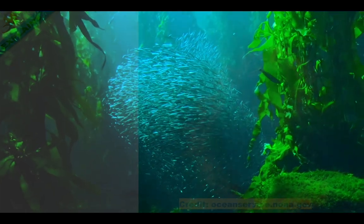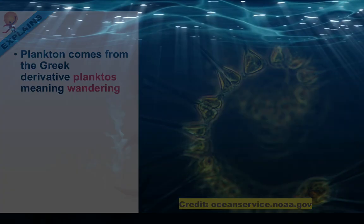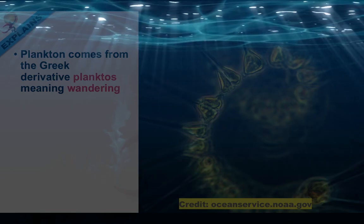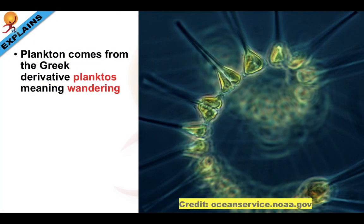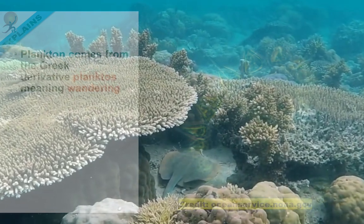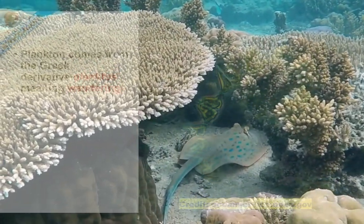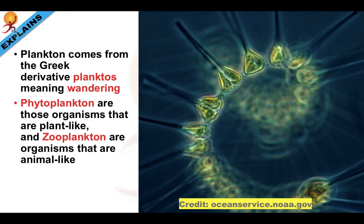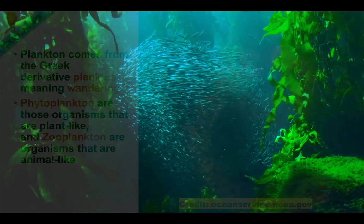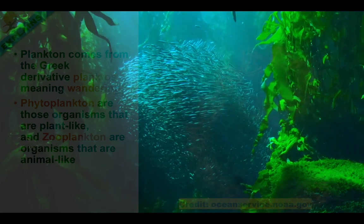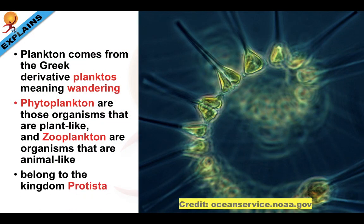The term plankton comes from the Greek derivative 'planktos,' meaning wandering. These organisms spend either part or all of their life in a drifting state with no ability to swim against a current — most have little or no ability to swim at all. Though some are larger, most planktonic creatures are microscopic and make up the bottom of the food chain in aquatic environments. Planktons can be divided into two categories: phytoplankton, which are plant-like organisms that create their own food, and zooplankton, which are animal-like organisms. Interestingly, many planktonic species are neither plant nor animal, but belong to the kingdom Protista.